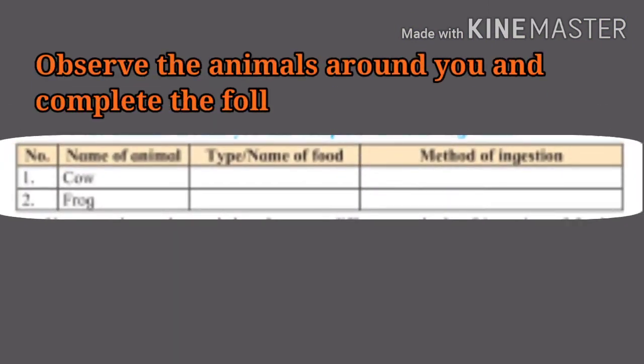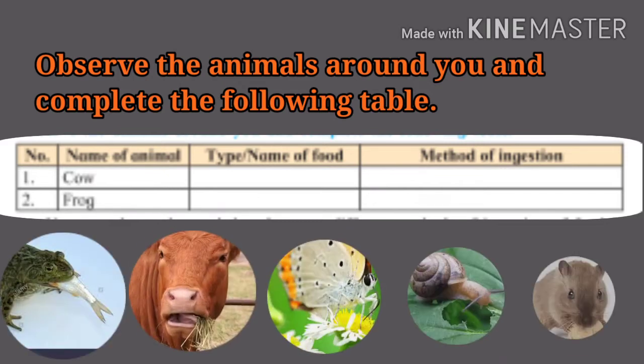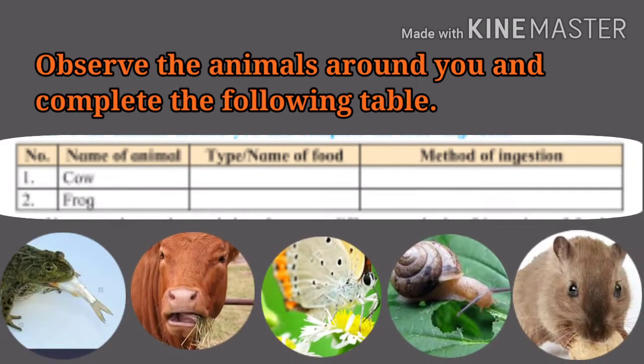Observe the animals around you and complete the following table. You must have observed that there are different methods of ingestion of food in different animals, like swallowing, chewing, sucking, scraping, gnawing, etc.